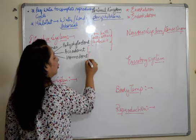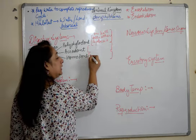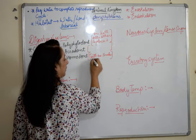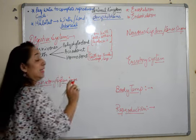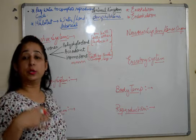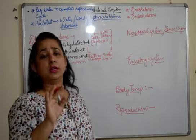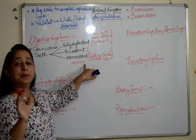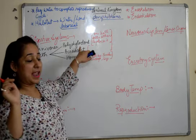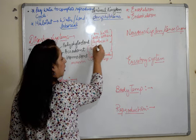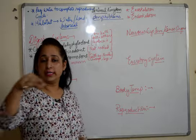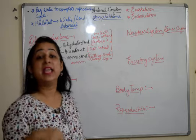Acrodont means the teeth are not rooted — they are just loosely attached to the gum region, not deeply embedded. Homodont means the teeth are similar in shape and size. If we talk about ourselves, we have heterodont teeth — incisors, canines, premolars, molars. But amphibians have homodont teeth: one type of shape and size.